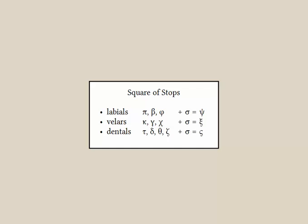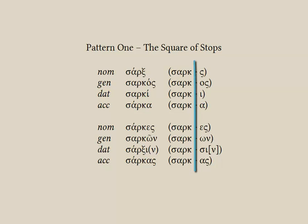We have the labials — formed with the lips: pi, beta, and phi — which become a psi when a sigma is added. Then the velars — kappa, gamma, chi — formed with the soft palate, also called palatals or gutturals, which become a xi when a sigma is added. And then the dentals — ta, delta, theta, and zeta — which drop out when a sigma is added. With the core pattern and the square of stops, we have what we need to understand the first pattern of the third declension.